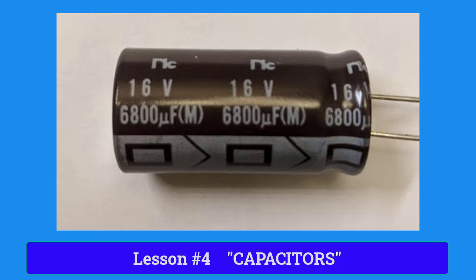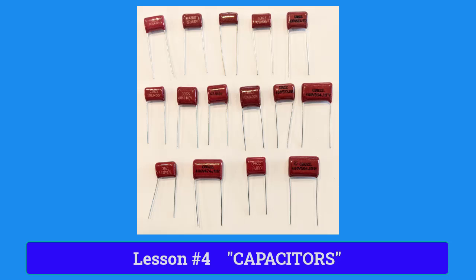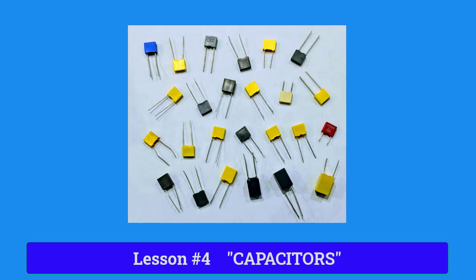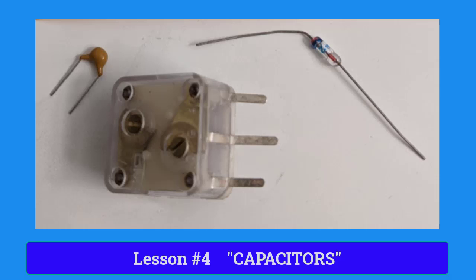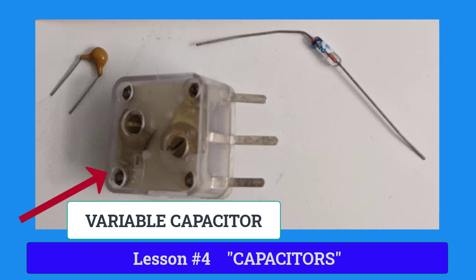Capacitors come in many sizes, shapes, and colors. Capacitance is measured in farads. For many radios, we use a variable capacitor to tune to the station we want to hear.